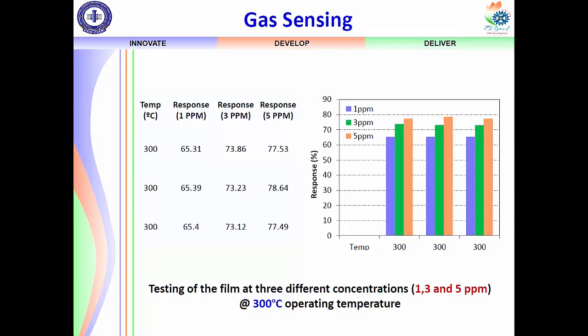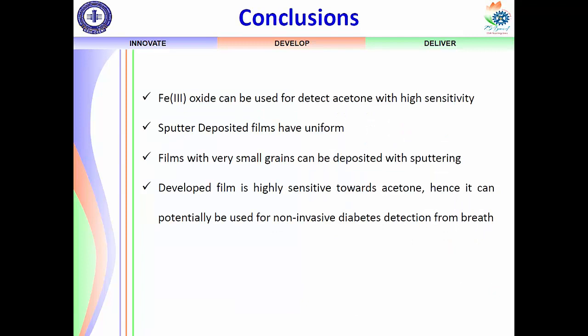In summary, we deposited an iron oxide film, characterized it, and tested it for acetone sensing, achieving very high sensitivity. We conclude that alpha-phase iron oxide is a good candidate for healthcare applications, particularly for non-invasive diabetes detection.